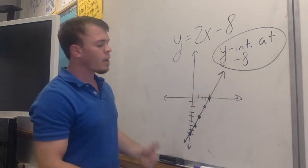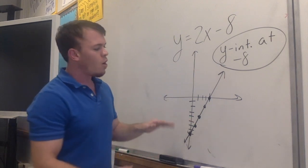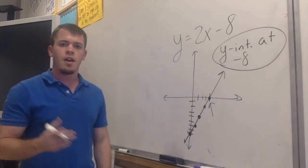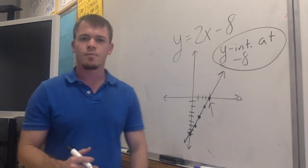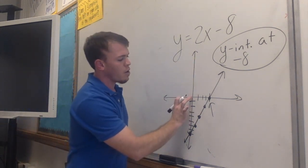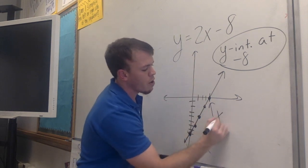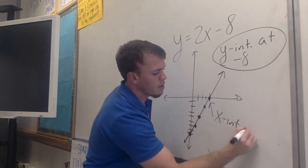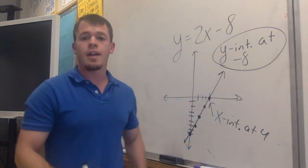Before I get into the x-intercept, go ahead and review yourself — what is the x-intercept right there? And we know if we count over: 1, 2, 3, 4 — we know that our x-intercept is going to be at 4. Now I'm going to explain that to you algebraically.